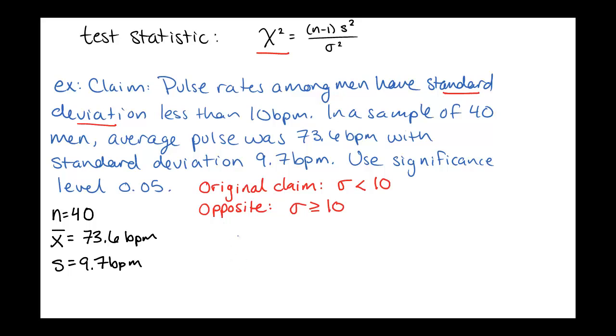And then from here we can say, H0, our null hypothesis, would be sigma equals 10. And our alternative hypothesis would be sigma less than 10.